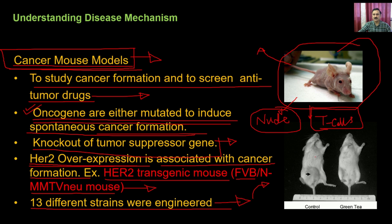When screening an anti-tumour drug, you take the mouse, induce cancer formation, and compare treated versus untreated mice. For example, a mouse with an untreated tumour versus a mouse treated with an anti-cancer compound from green tea shows the tumour is no longer present. You can use vernier calipers and a screw gauge to measure tumour volume and determine whether the anti-cancer compound is working.